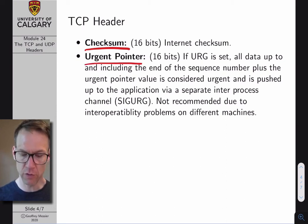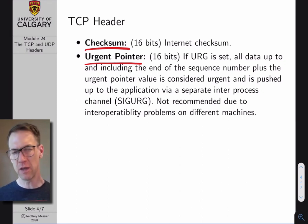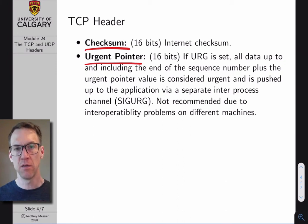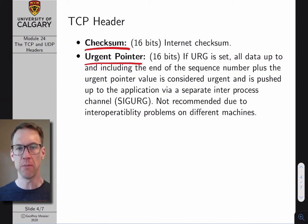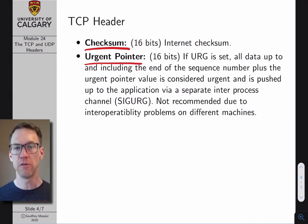Following the checksum, we have the urgent pointer. If the URG flag is set, the urgent pointer value is meant to send the data in this TCP packet quickly up to the application using a side channel provided by the operating system, rather than going through the regular protocol stack socket interface. This isn't really used anymore because it's not super compatible across multiple operating systems, and as a result this is another security concern in TCP — malware can use these unused fields to store values.